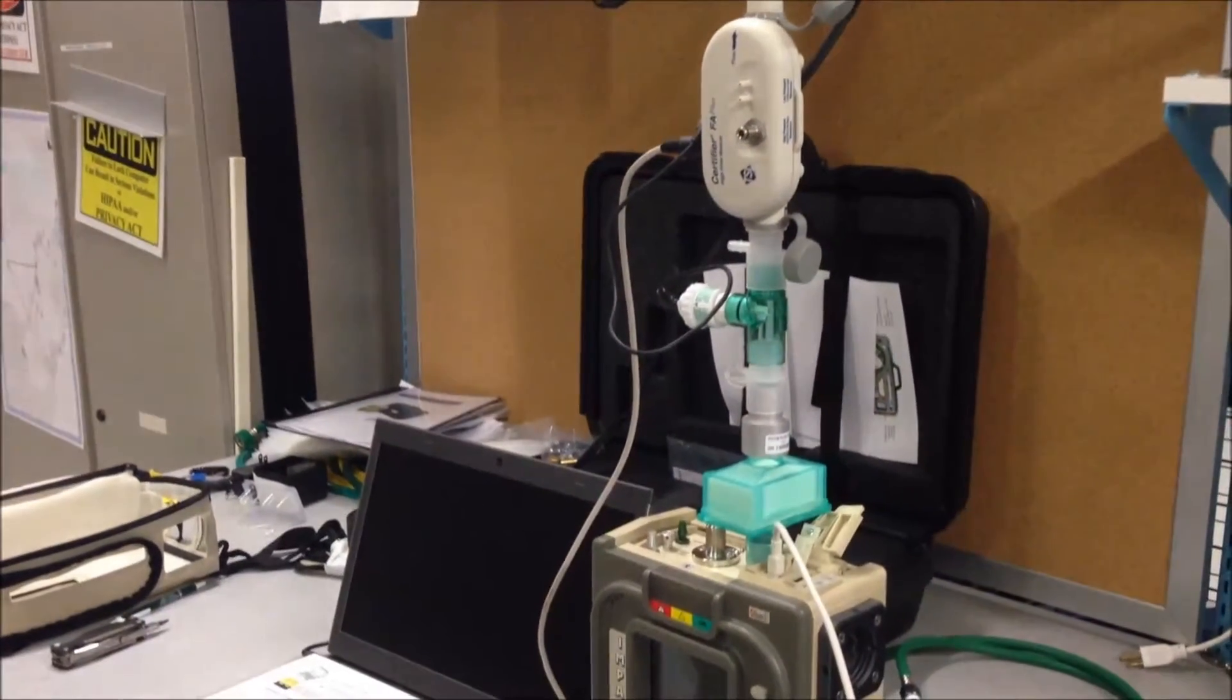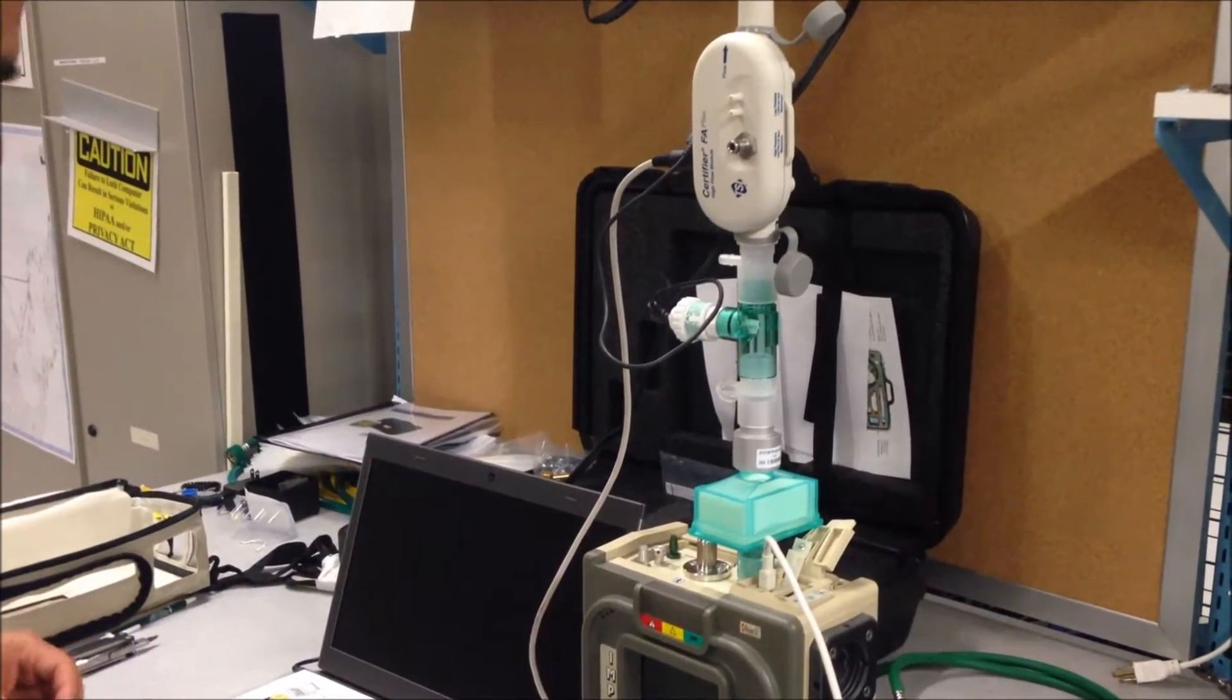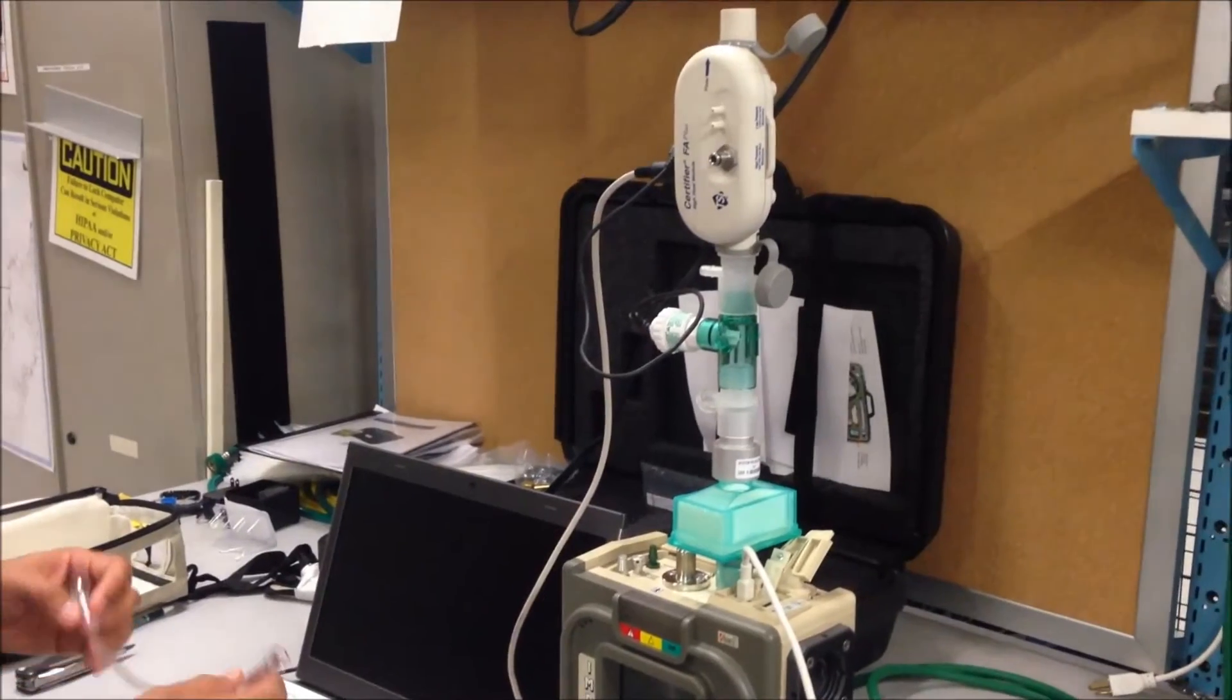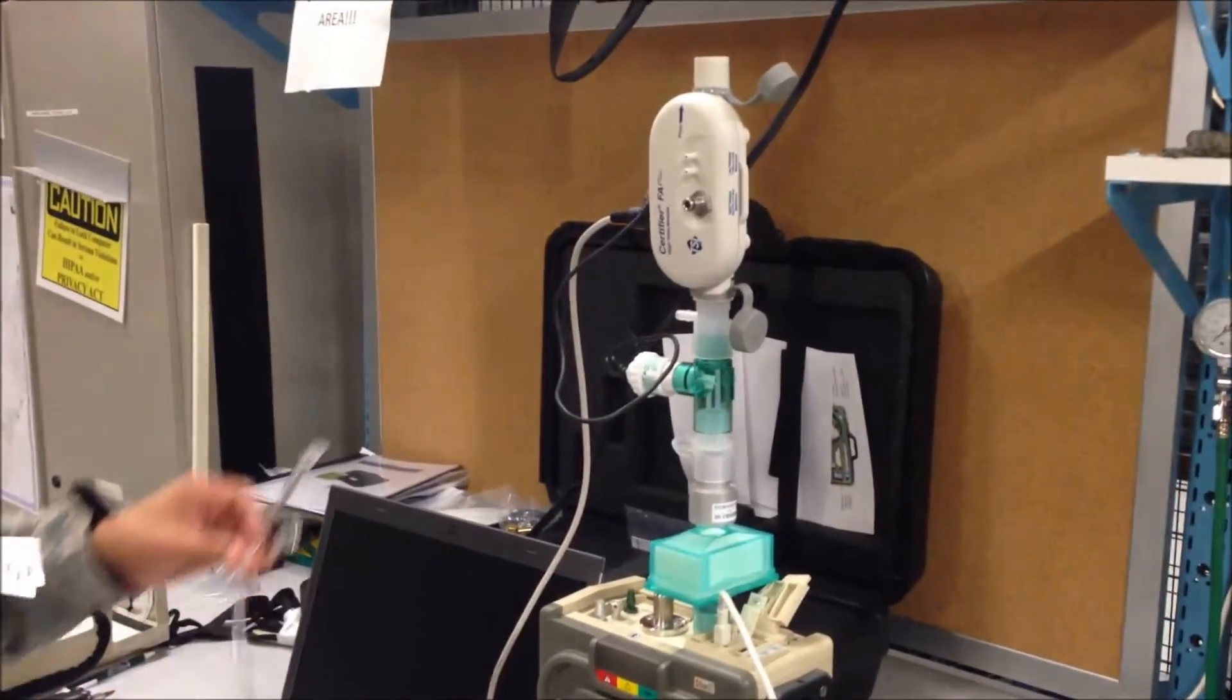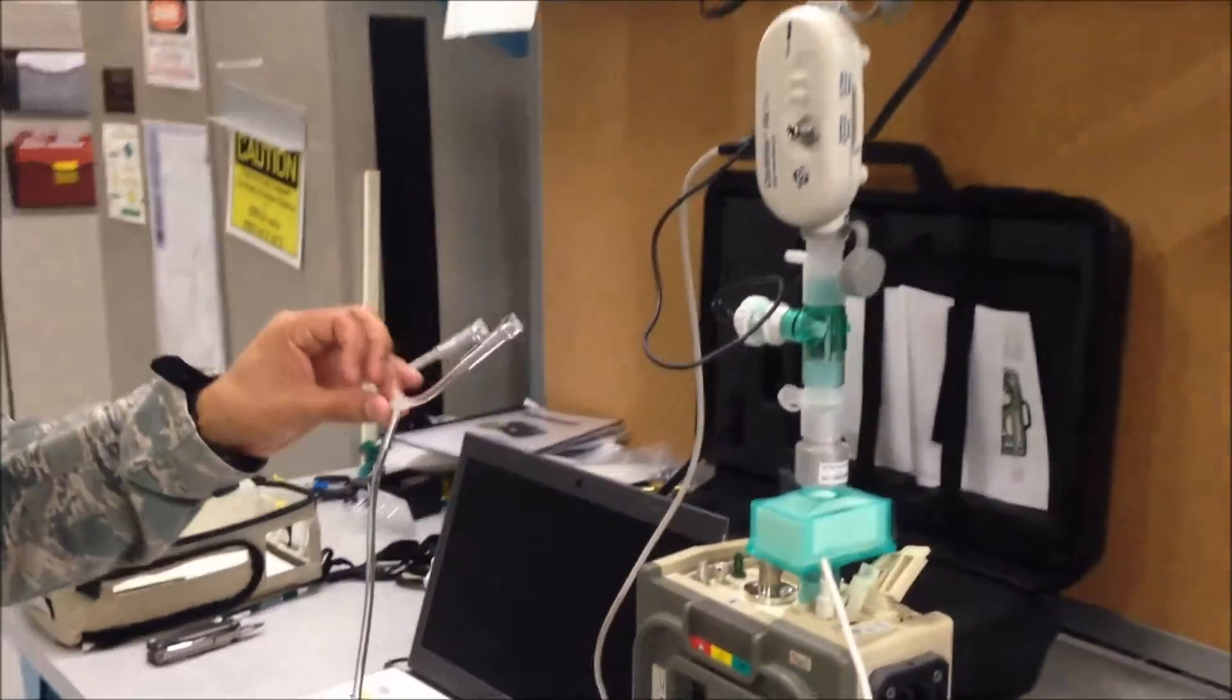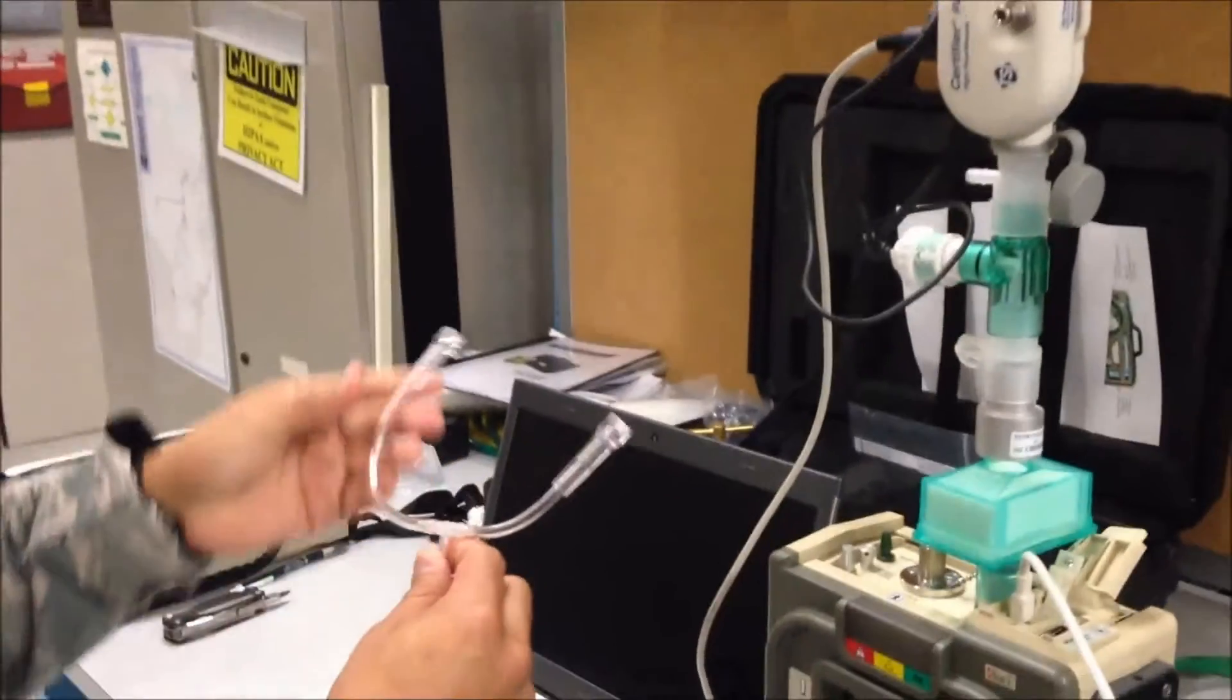Finish the calibration test setup by connecting an airway pressure transducer Y-tubing. This Y-tubing does not come in the kit, so you will have to make this yourself.